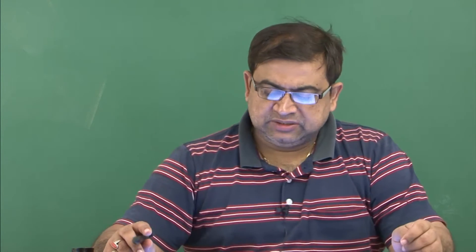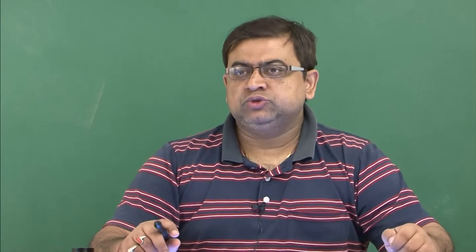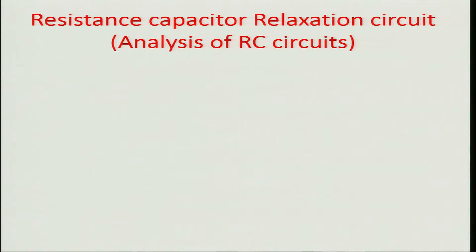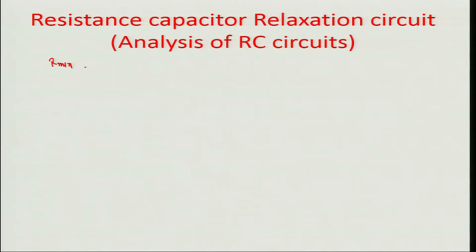Hello and welcome to this manufacturing process technology part 2, module 32. We were talking about designing EDM circuits and the way you would set up the minimum resistance, particularly in purely inductive circuits. We found that the R minimum in the charging circuit is typically root of L by C.